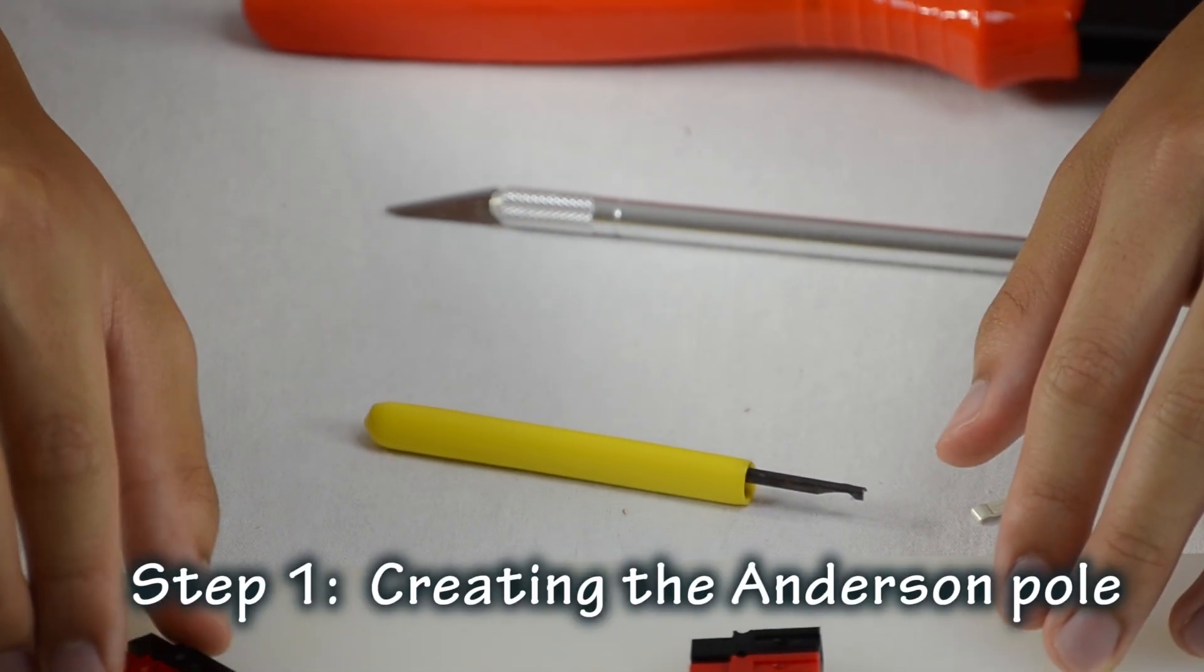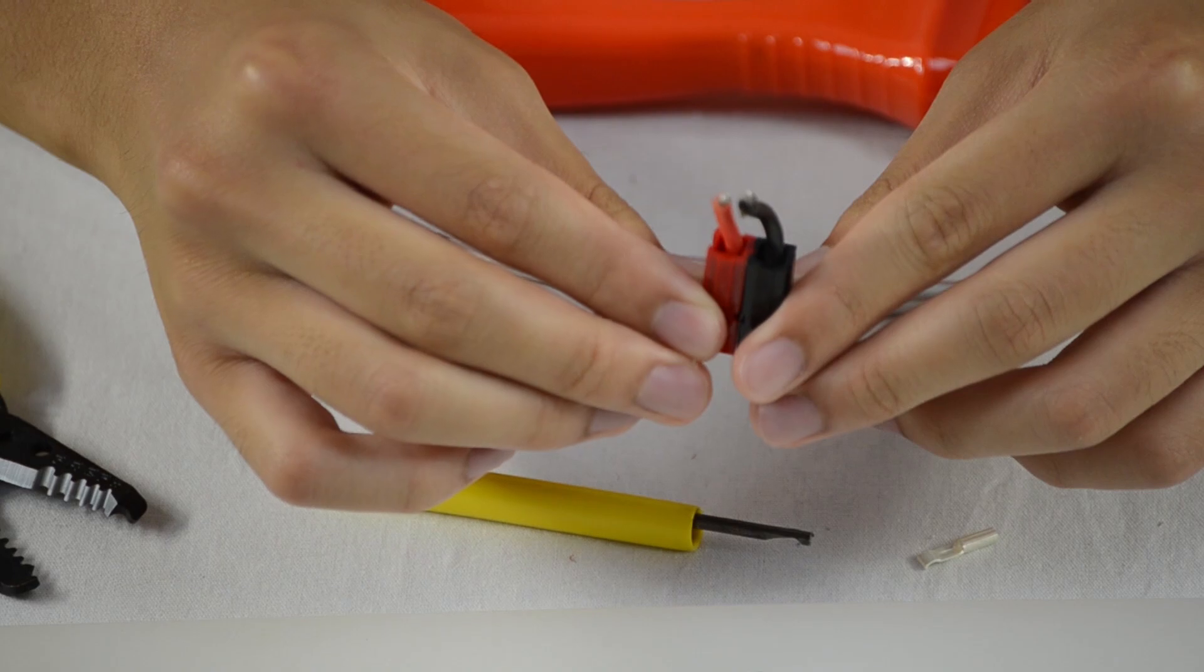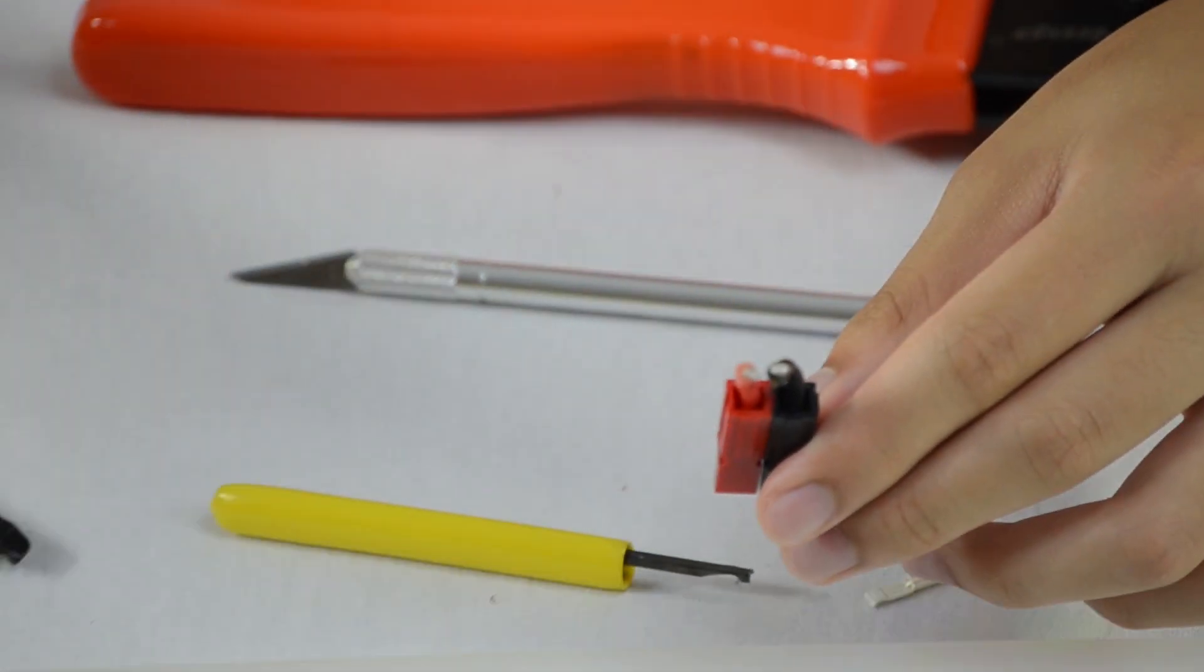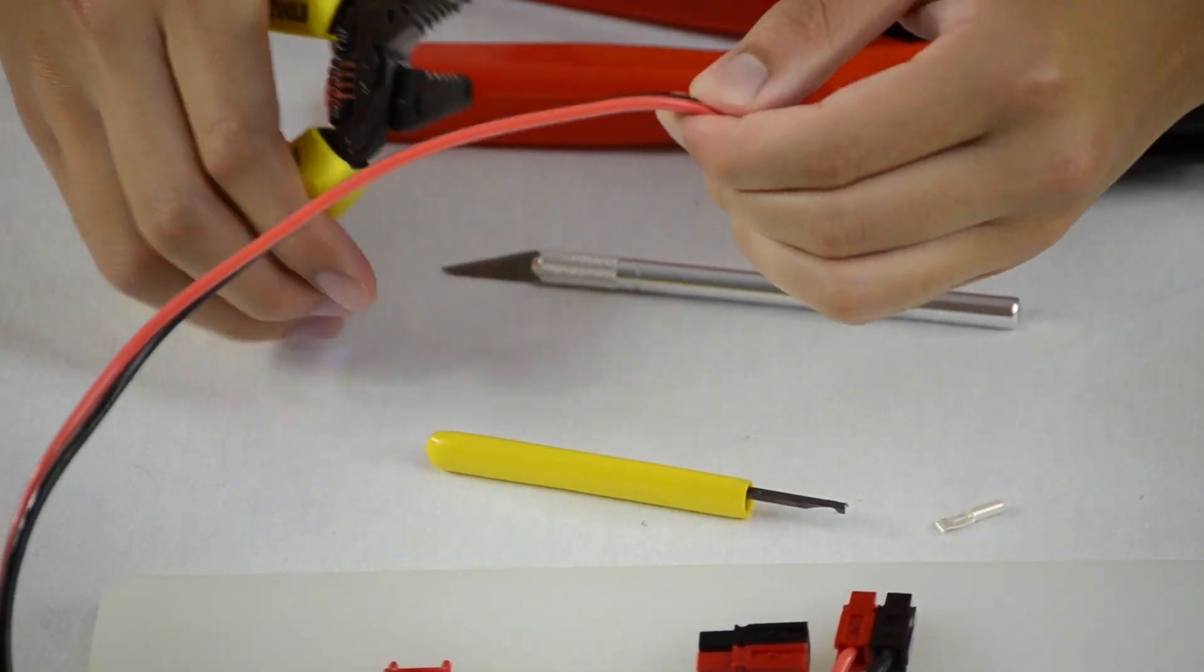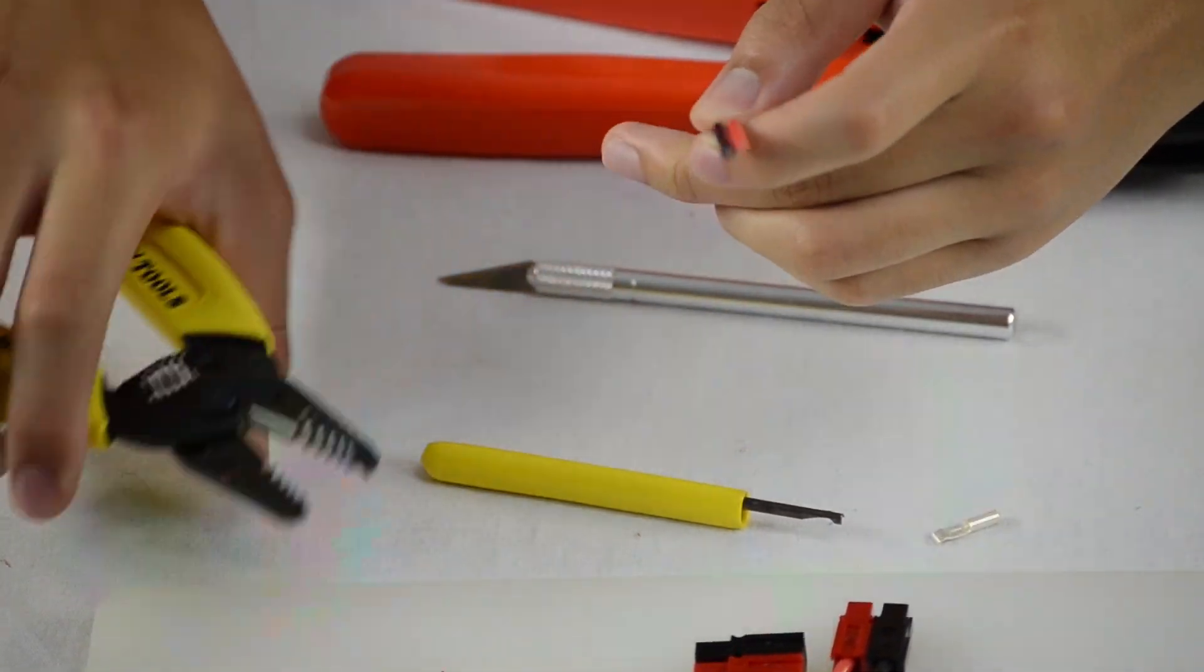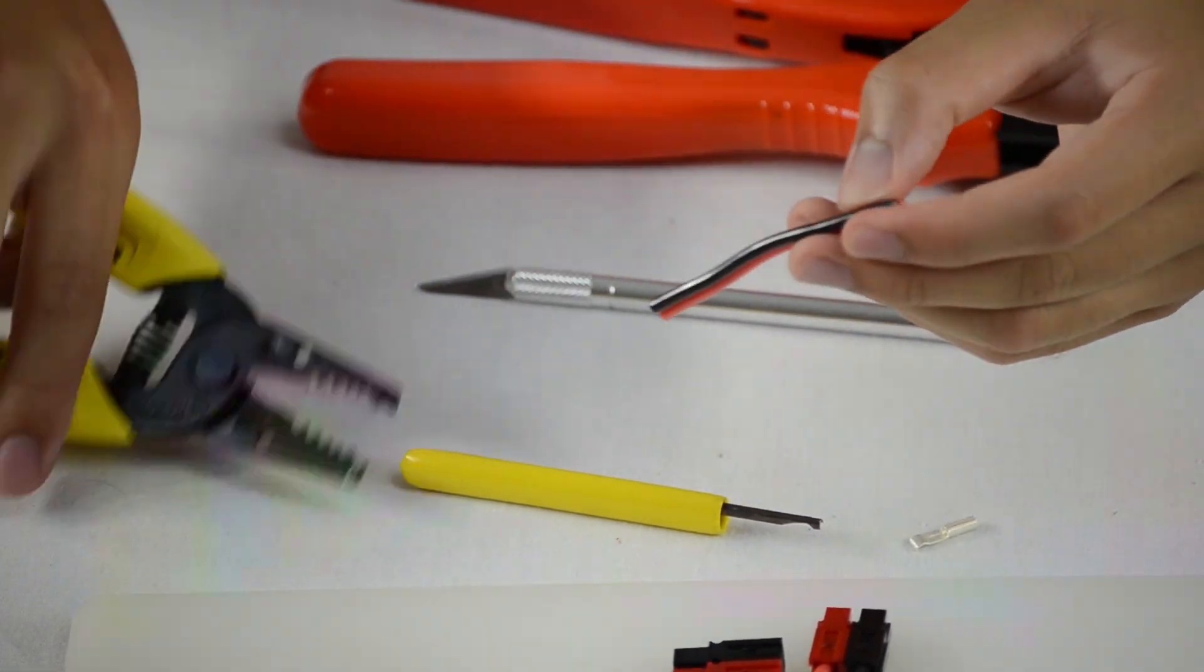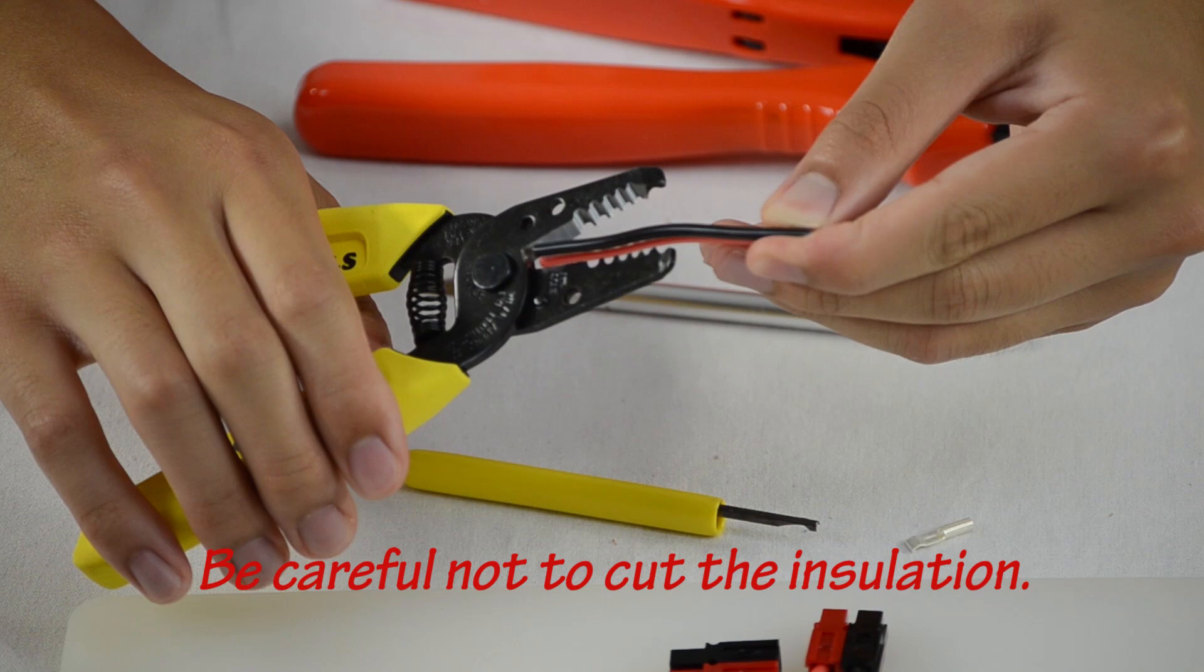Alright, so let's start building the Anderson poles. Your first step is to build something like this. This will plug into your controller. So, what you're going to do is take some red and black wire. You're going to cut about two and a half inches from it. And then, you're going to want to separate the black wire from the red wire. You do that by just cutting down the middle of these two wires.